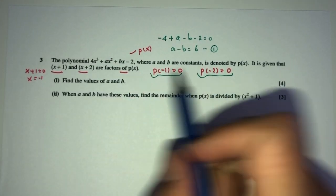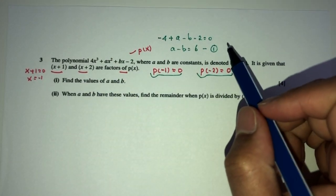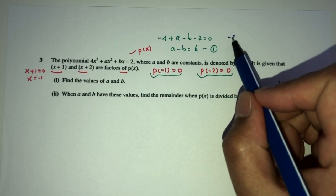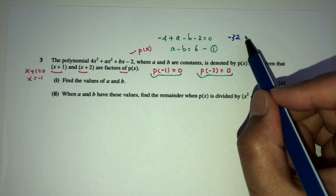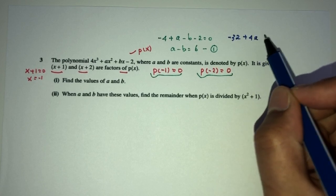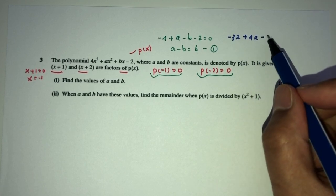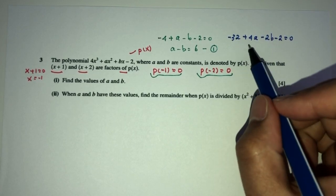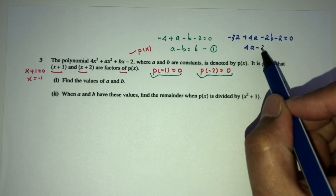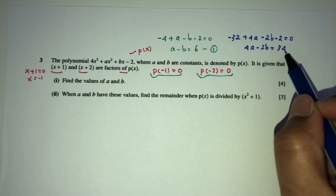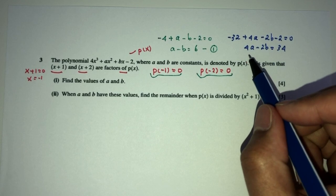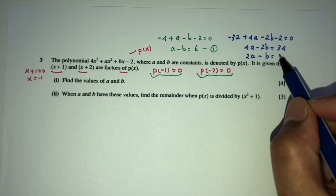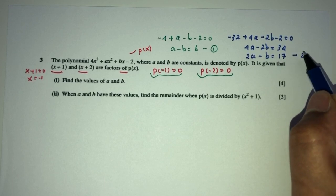For equation number 2, x equals minus 2: that should be minus 8 times 4, which is minus 32. Then plus 4a minus 2b minus 2 has to be 0. So we have 4a minus 2b equal to 34. Dividing by 2, you will have 2a minus b equal to 17. This is equation number 2.